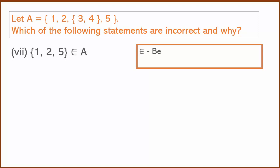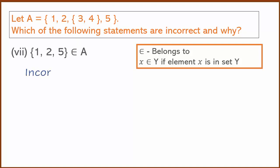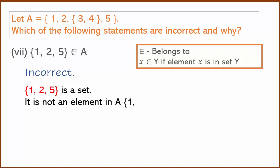This is a belongs-to question. The set {1, 2, 5} is not an element of A — it is a set, not a member. That is not part of A. Therefore the statement is incorrect.